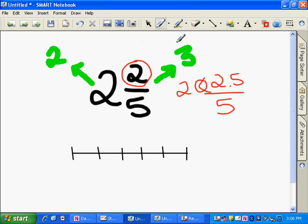So on a number line, the way you can think about it is, again, 2 and 2 fifths falls between 2 and 3. So this is 1 fifth, 2 fifths, 3...